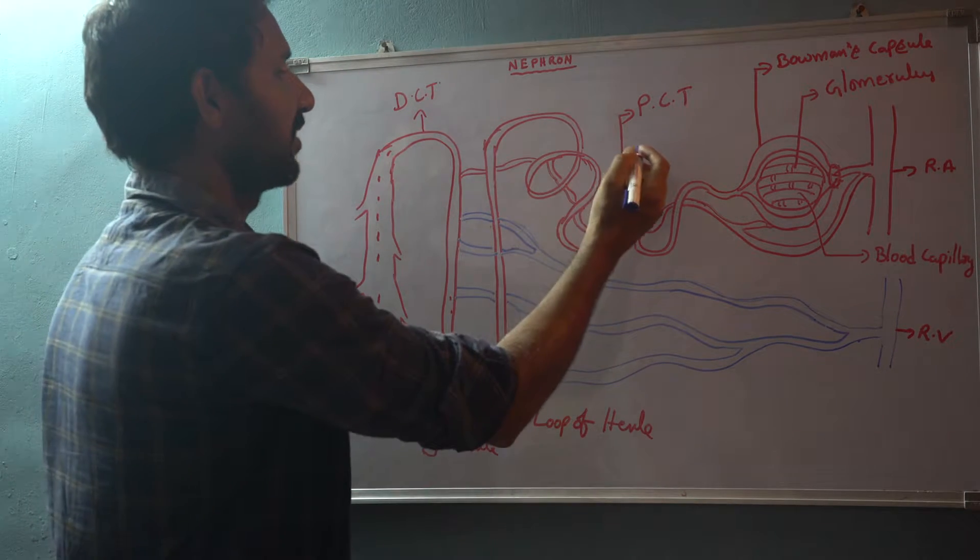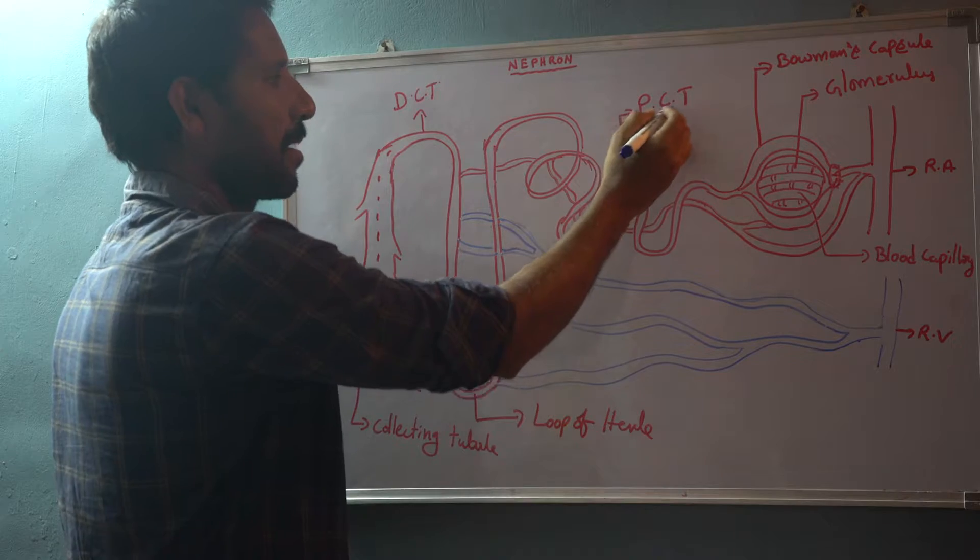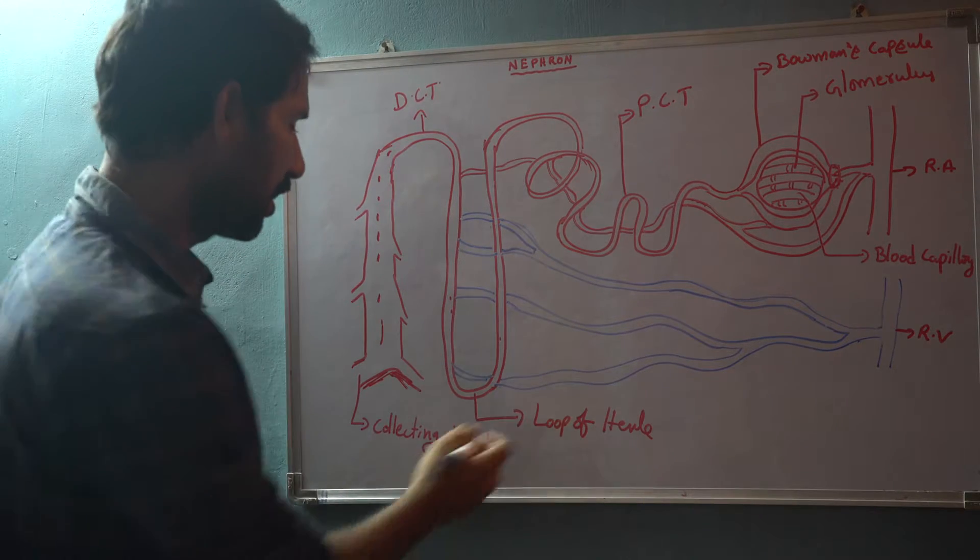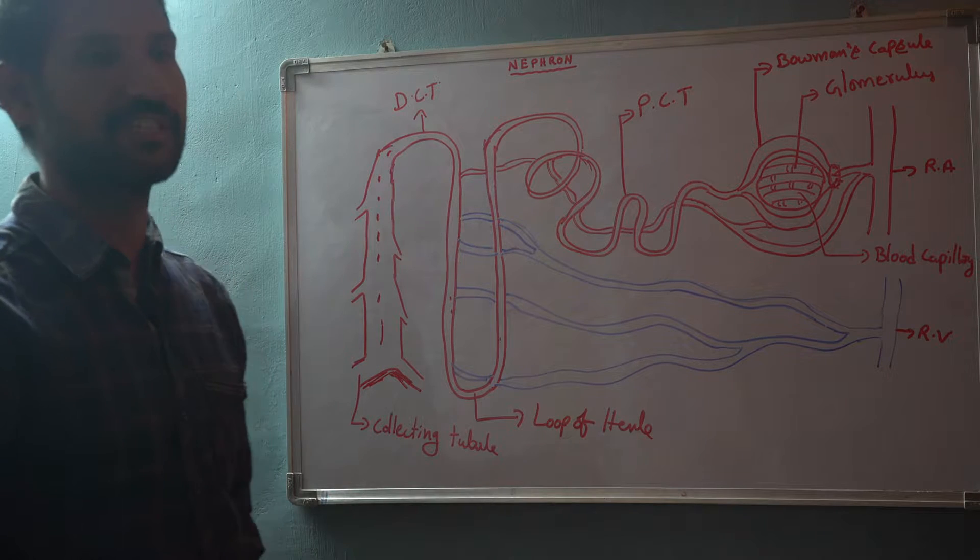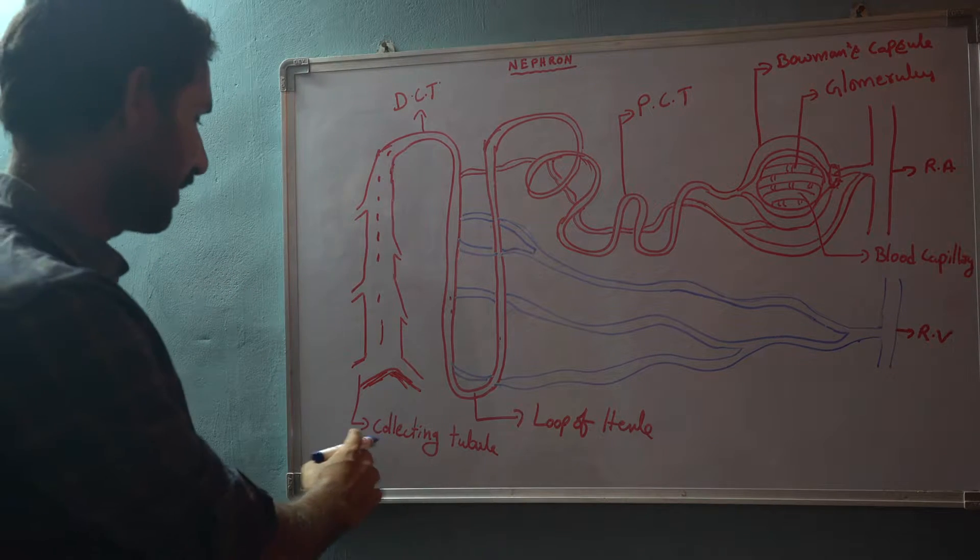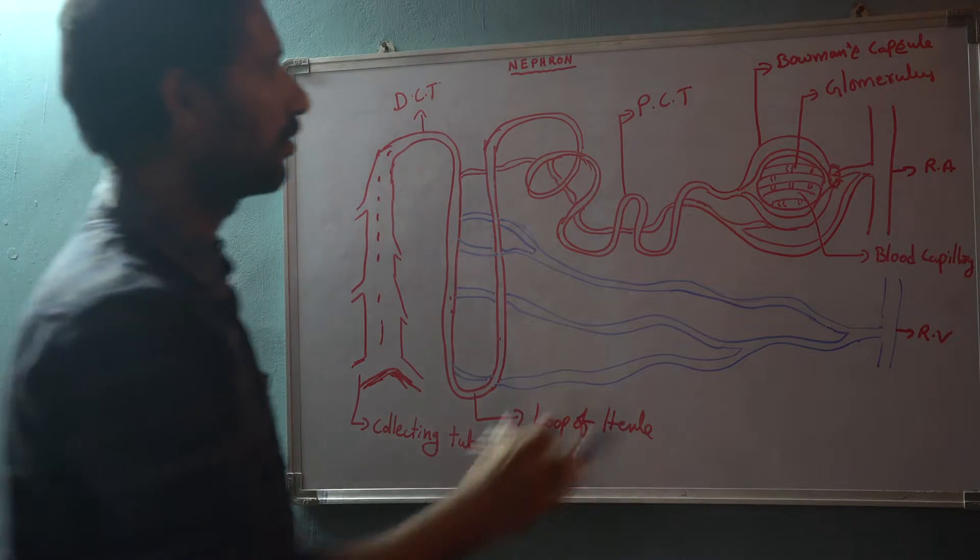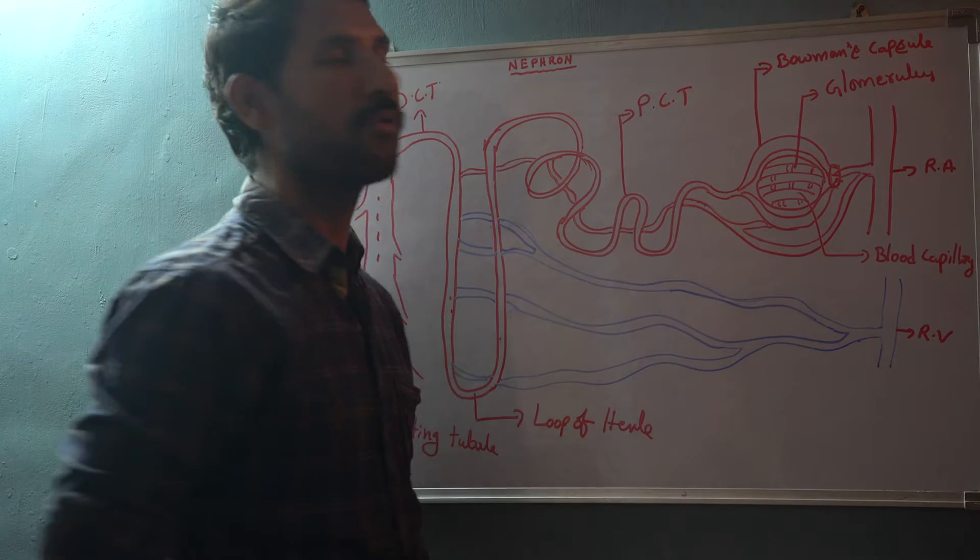In the tubular portion we can see three major parts: one is proximal convoluted tubule, loop of Henle, and distal convoluted tubule which is linked with collecting tubule. Now first we'll talk about Bowman's capsule.